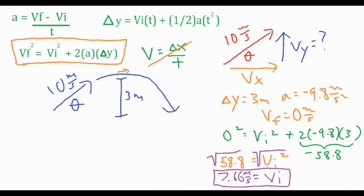Alright, so I plugged in my numbers. I found the product of these three, which is negative 58.8, added it to the other side, took the square root of both sides, and I got 7.66 meters per second for my vi. So remember, that's just the initial velocity in the vertical direction.